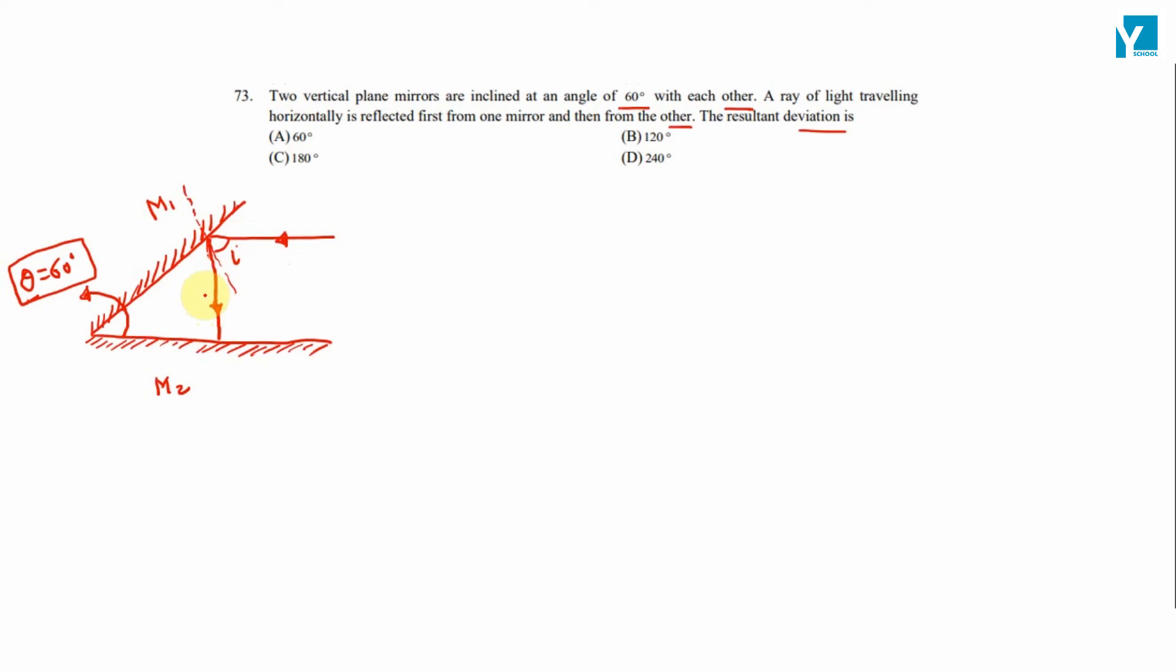Then it comes to mirror 2 and is reflected from mirror 2. So the question is, what is the net deviation produced by the system or combination of two mirrors?